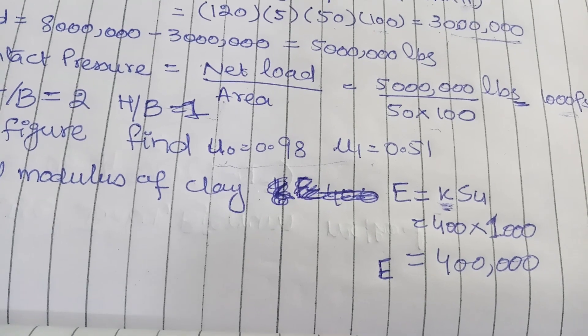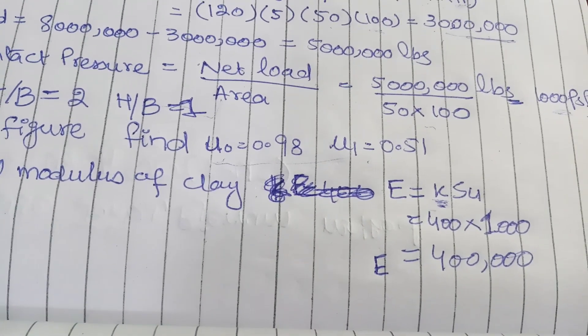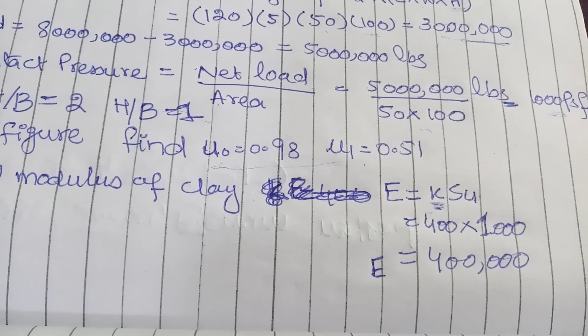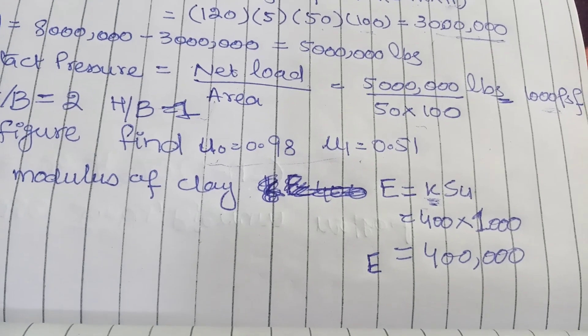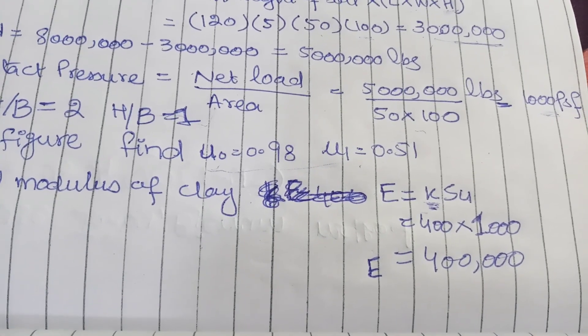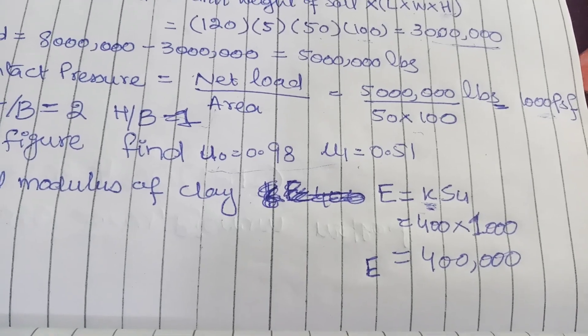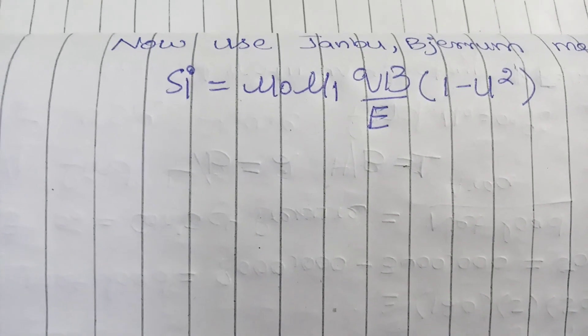Now we will put the value of k in the formula: 400 multiply 1000. 1000 is given in the data. So e value is equal to 400,000. Now this is the formula.